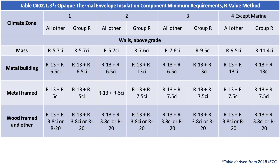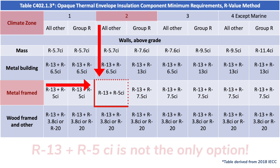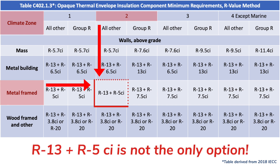If you had taken this climate zone and wall type info and jumped straight to the IECC R-value table, you might have assumed that the only way to meet code for a metal frame building in climate zone 2 was to use R13 insulation in the cavity and R5 continuous insulation. However, this is not the case. As long as the equivalent maximum U-factor is satisfied, there are other R-value combinations possible.